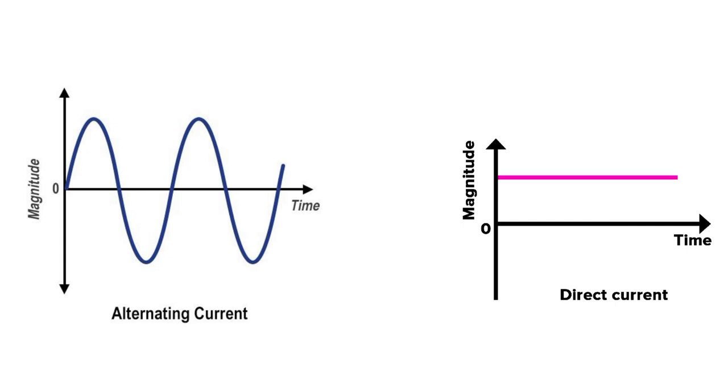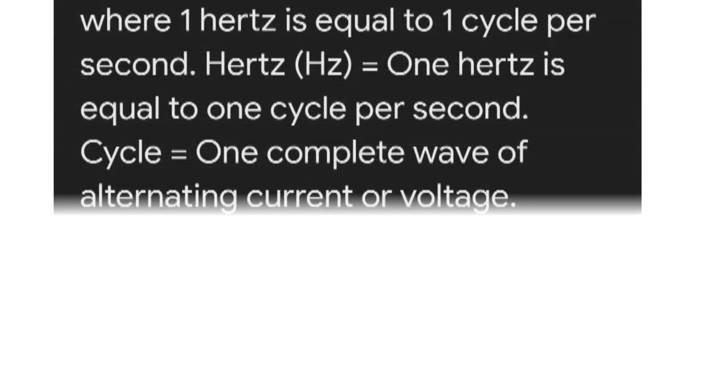That's why in case of DC, the frequency is zero. You have to remember one thing: one hertz is equal to one cycle per second.